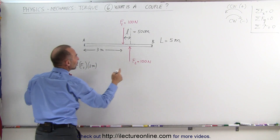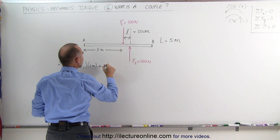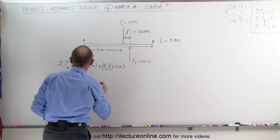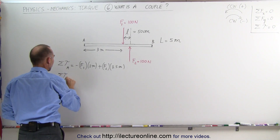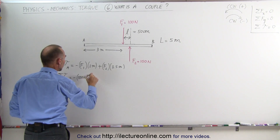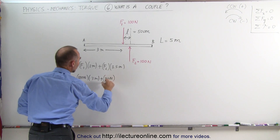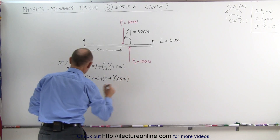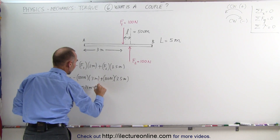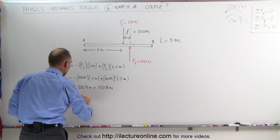We add to that the torque caused by F2. Since F2 causes a counterclockwise torque, that's a positive torque — positive F2 multiplied times the distance, in this case 3.5 meters. So when we add those up, the sum of the torques about point A is equal to minus 100 Newtons times 3 meters, plus 100 Newtons times 3.5 meters. This is equal to minus 300 Newton meters plus 350 Newton meters.